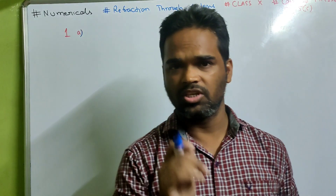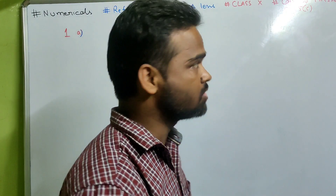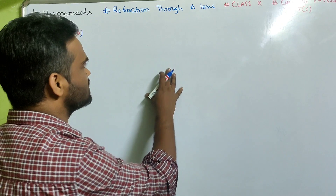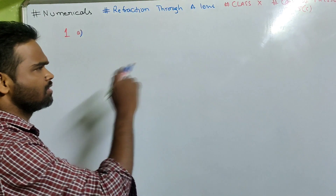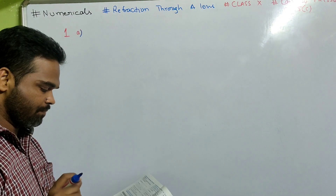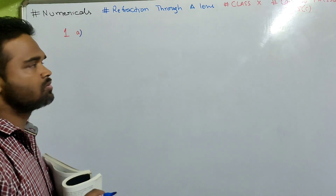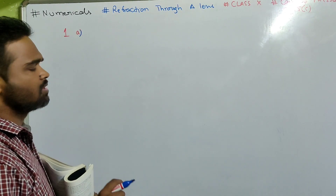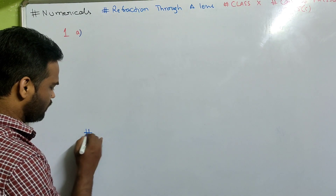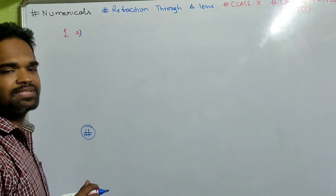Hi kids. So in this video, we are going to discuss numericals from refraction through a lens, class 10. This is from Concise Physics, exercise 5C, number 1A. Now, before going through the numericals, just a small recap of what we did in the previous class, because that will be helpful while doing this out.